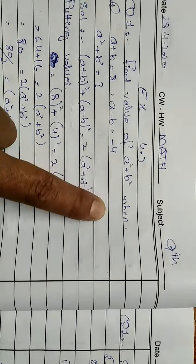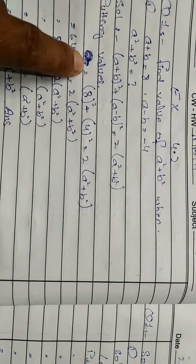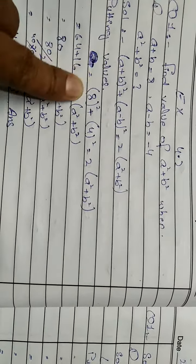The formula is (a + b)² + (a - b)² = 2(a² + b²). Now we will put the values in the formula.